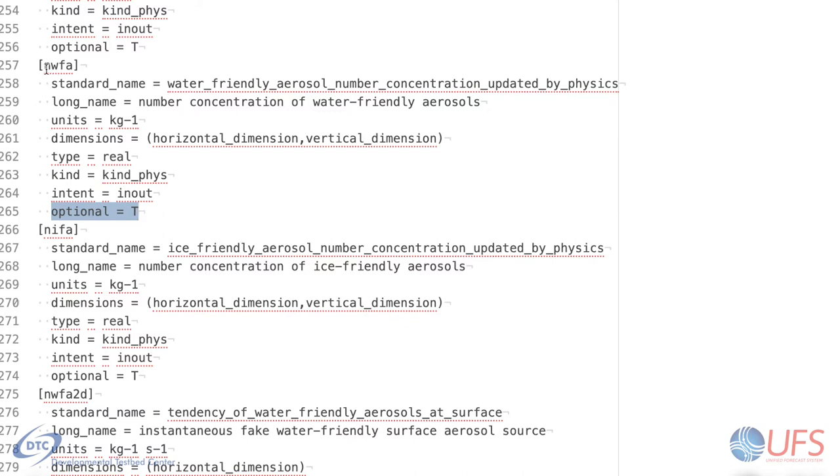Here, we should make a distinction between a variable's local name, which is what it is actually called in the Fortran code, that can be anything that conforms to the Fortran standard, and a variable's standard name. The standard name is special, because it is the key by which the CCPP framework knows a variable.